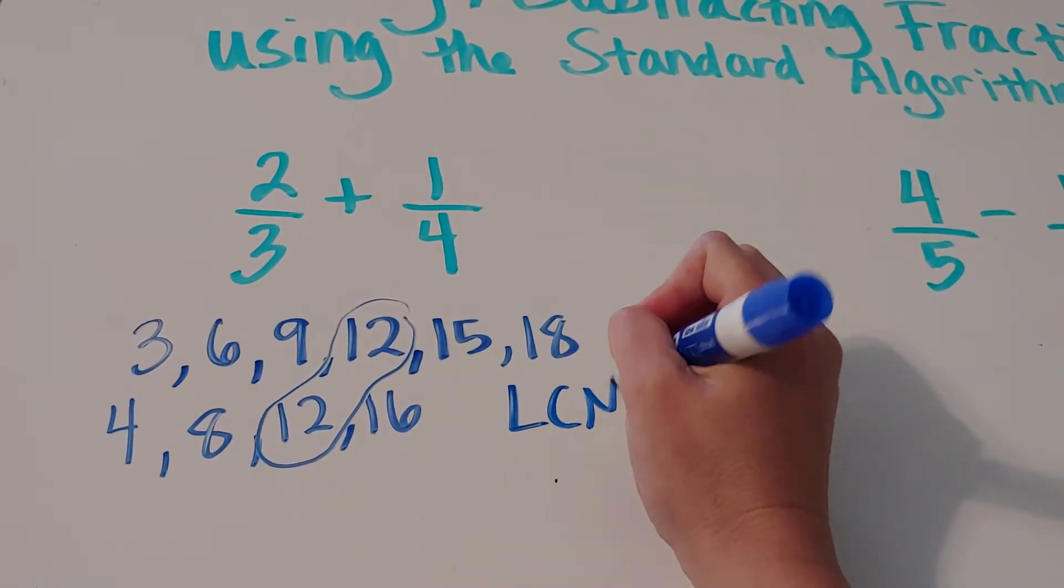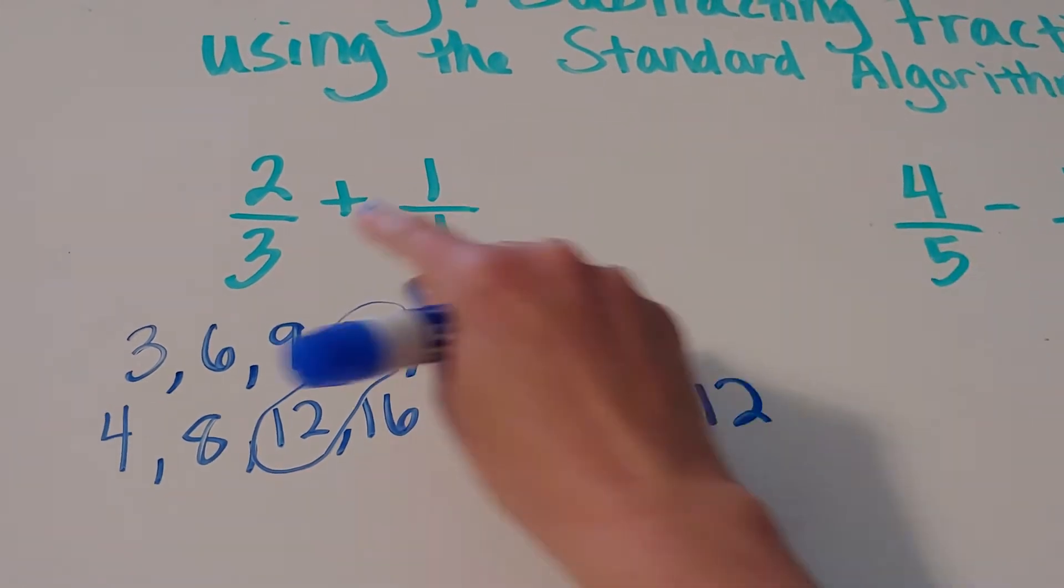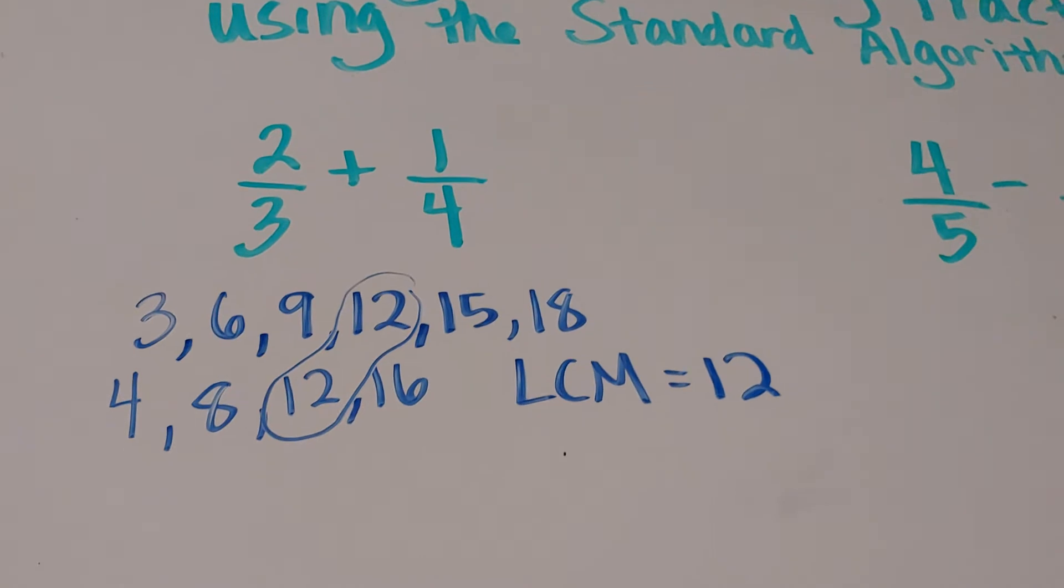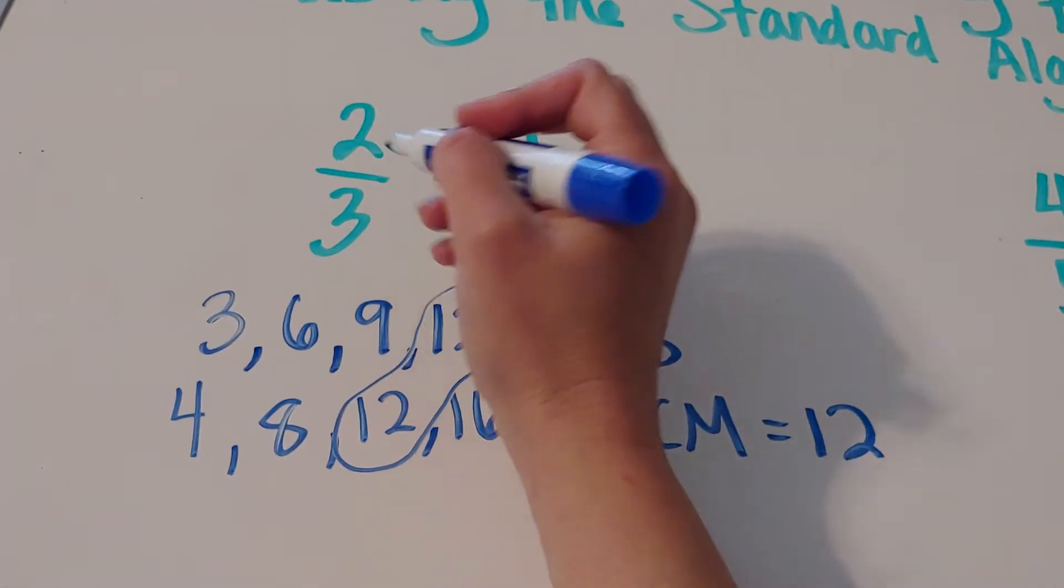So the least common multiple or least common denominator here is 12. So I want to build both of these into a denominator of 12. How we do that, of course, is that we want to make a common denominator of 12.